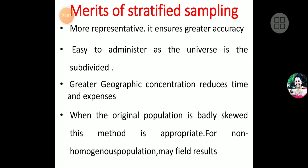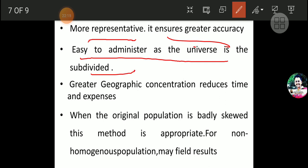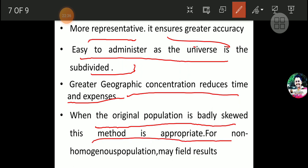Now the merits of stratified sampling: it is more representative, and it ensures greater accuracy as compared to systematic random sampling. It is easy to administer — an easy method that anybody can follow. It provides greater geographic concentration and reduces time and expenses. When the original population is badly skewed, this method is appropriate for the non-homogeneous population.